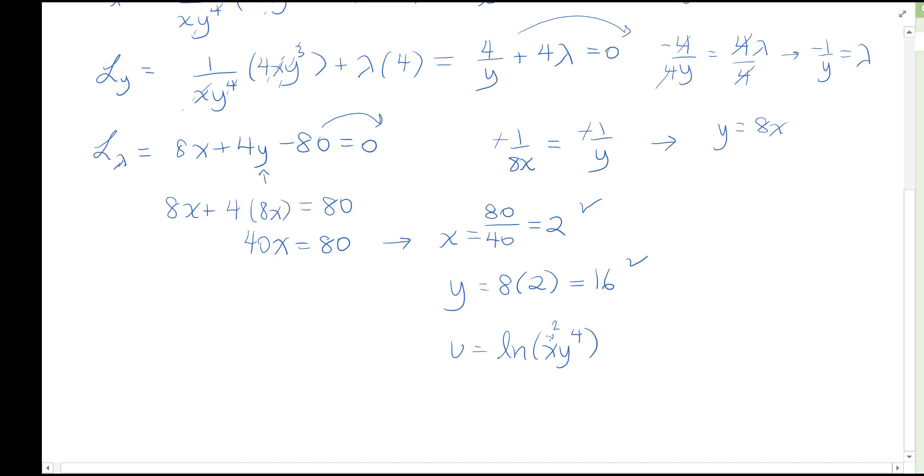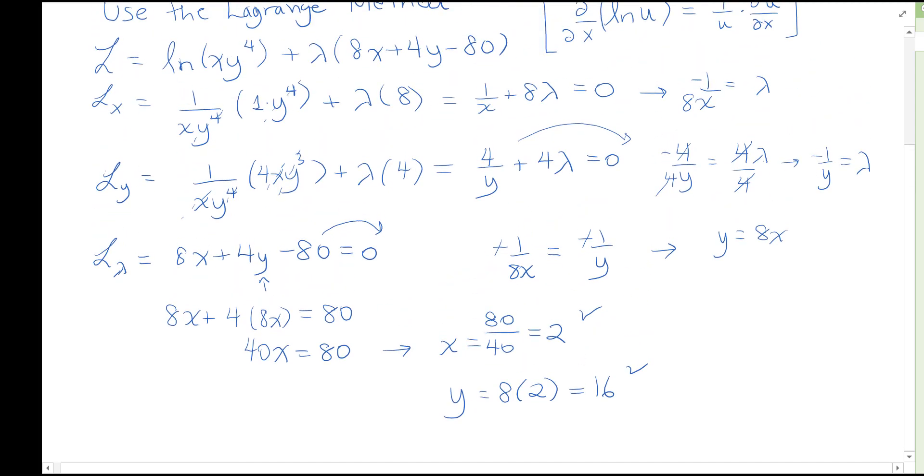If we needed that, again, we'd plug in the 2 for the x, the 16 for the y, and take it to the power of 4, log all of that. We don't actually need to go solve that in this case. We'll just stop here. Optimal solution is when x is 2, y is 16. That gives us the highest possible utility.